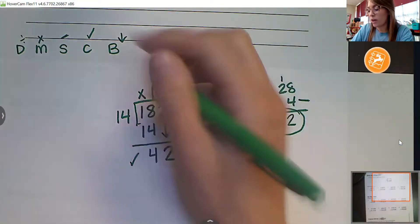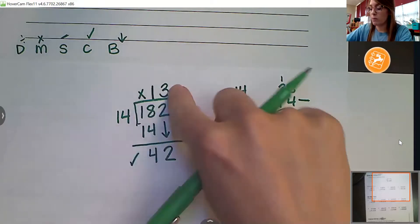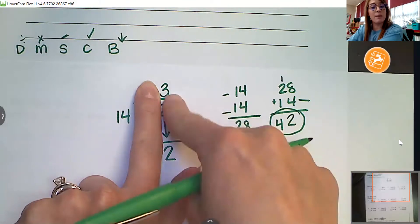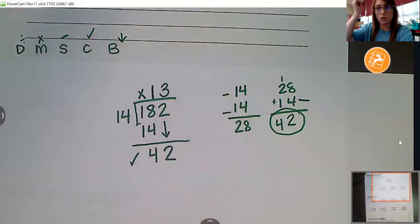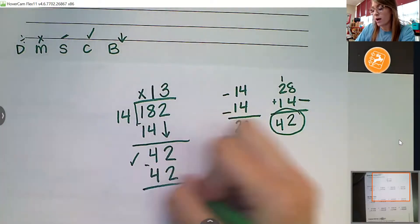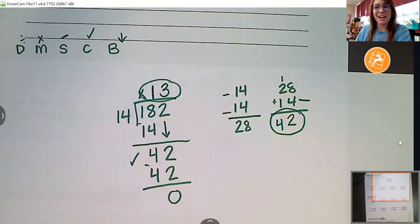So, I'm going to put that three right here up top. Four times three. Remember when we multiply, we only multiply by the number we just most recently put up top. So, four times three, or 14 times three, goodness gracious, is 42. Very good. Then, when we subtract, we get zero, and 13 is our answer.